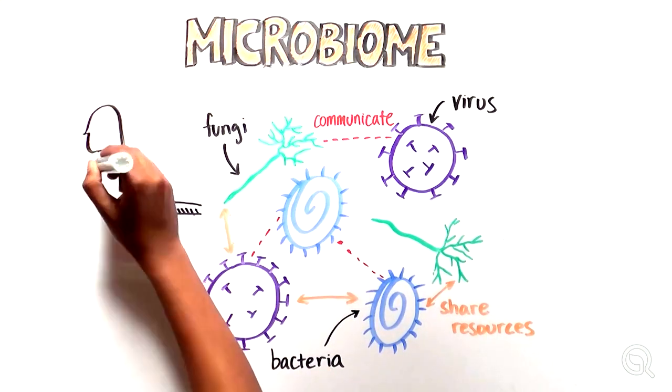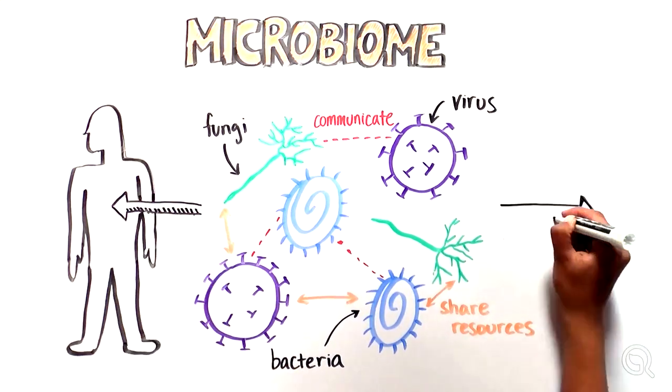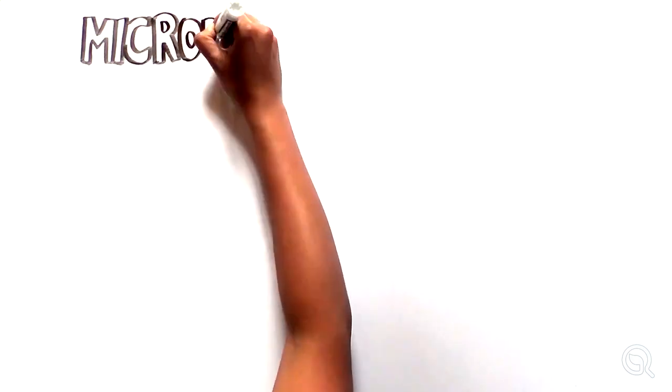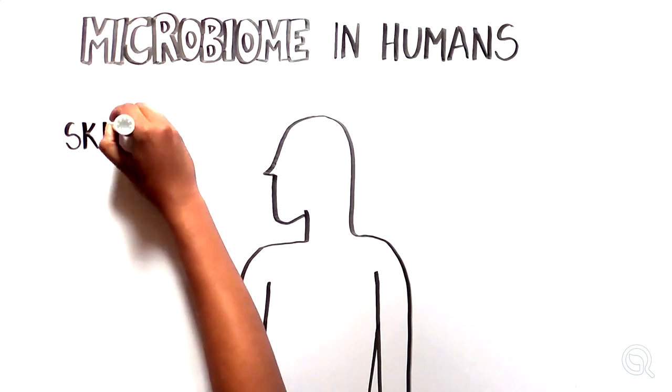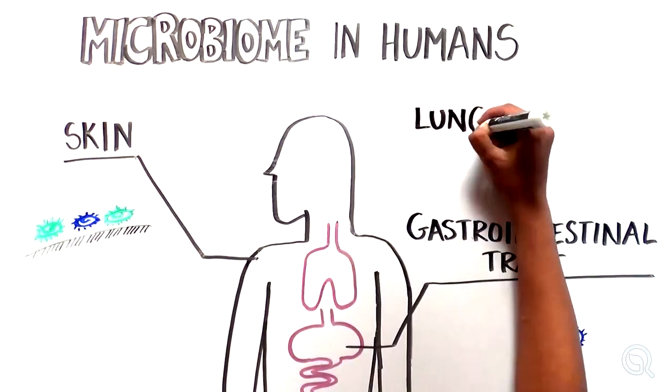Many of these communities of microorganisms exist within other organisms such as humans, but they can also exist in the world around us. Let's start with the humans first. There are multiple microbiomes within the human body, including on the skin, in the gastrointestinal tract, lungs, and even the belly button.